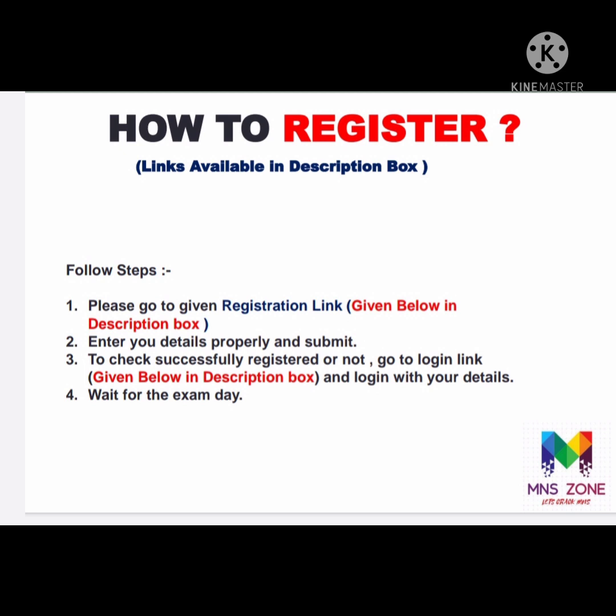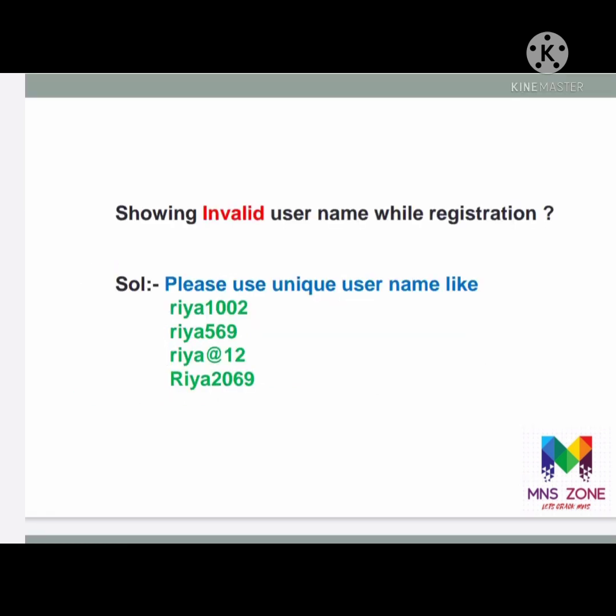After registering successfully, you need to wait until exam day. Many students face the problem of 'invalid username' during registration. The solution is: many students simply enter a common name — for example, just 'Rhea' — so please use a slightly unique, slightly different name. For example, instead of just 'Rhea,' use Rhea1002, Rhea569, Rhea12, or Rhea2069 — something unique like that.